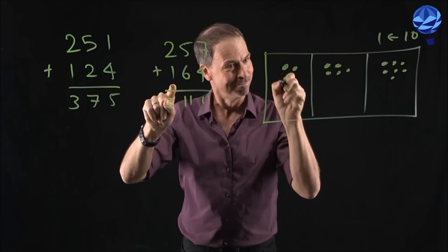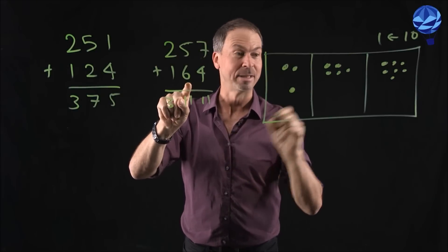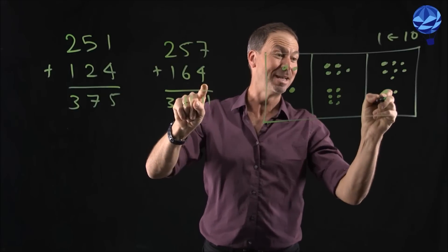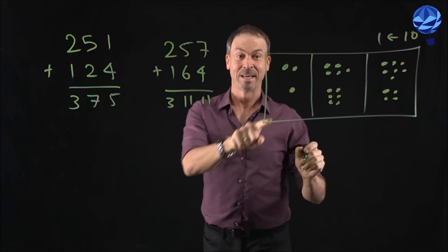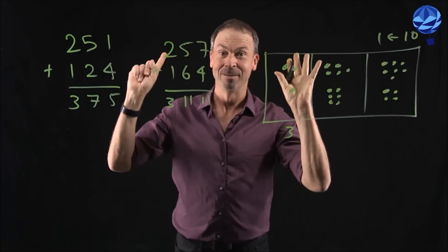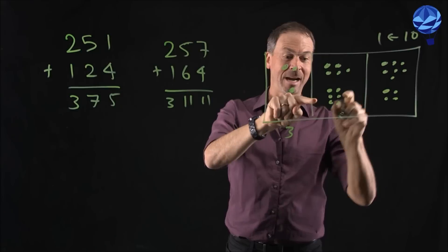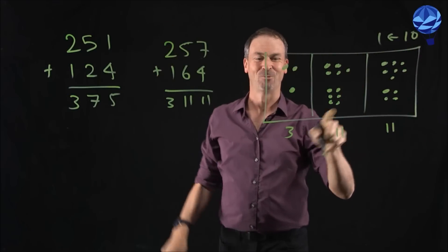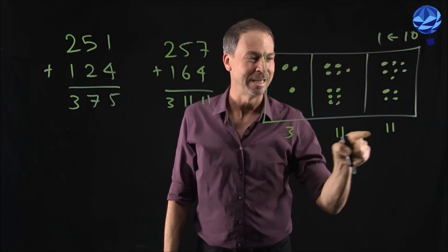And we're being asked to add to that 164. Okay, add on one more hundred. I can do that. Add on six more tens. No worries. I can do that. Add on four more ones. Piece of cake. So the question is, how many hundreds do I have? Three. How many tens do I have? I have 11 of them. How many ones do I have? I have 11 of them. I was right.